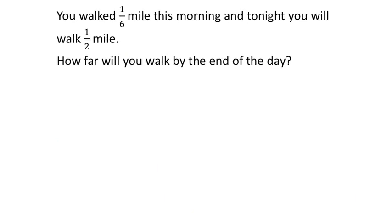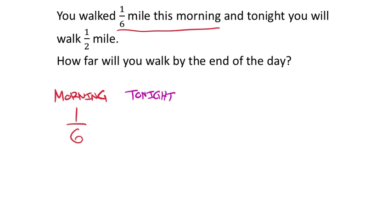Next problem: You walked one-sixth mile this morning, and tonight you will walk one-half mile. How far will you walk by the end of the day? The operation here will be addition, since we're finding a total. You went at two different times — morning and tonight — so we have two values to add: one-sixth and one-half.